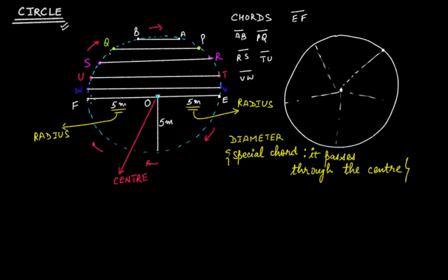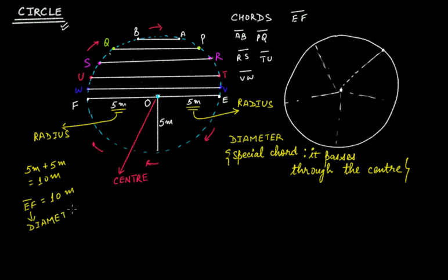So EF equals five plus five meters, which is ten meters. That means the diameter EF is twice of five meters — that is, twice the radius. Diameter equals two times radius. This is a very important formula: diameter is twice of radius.